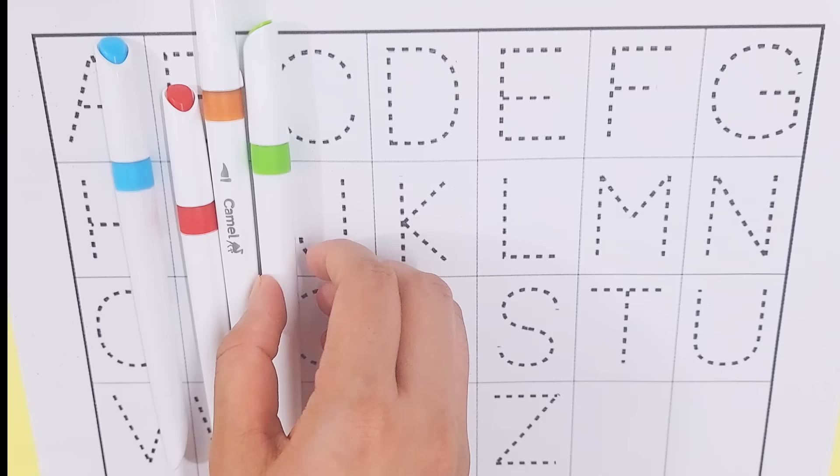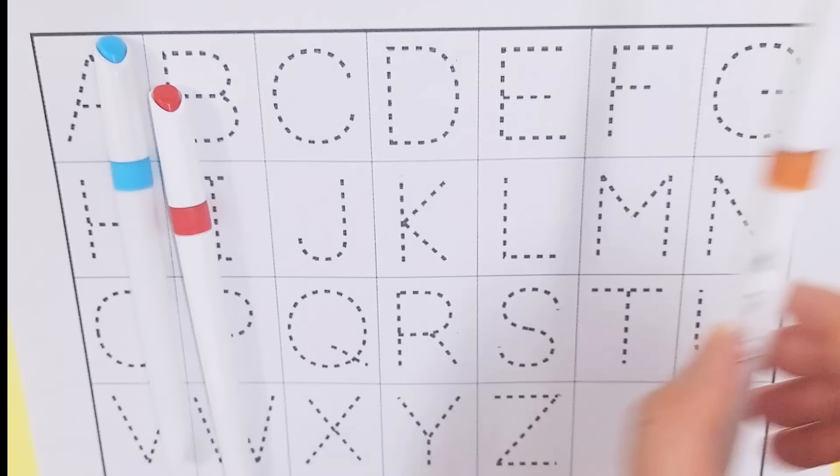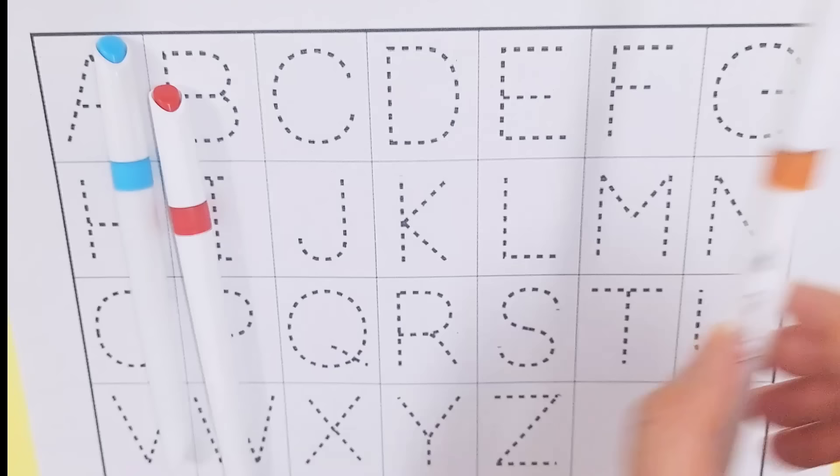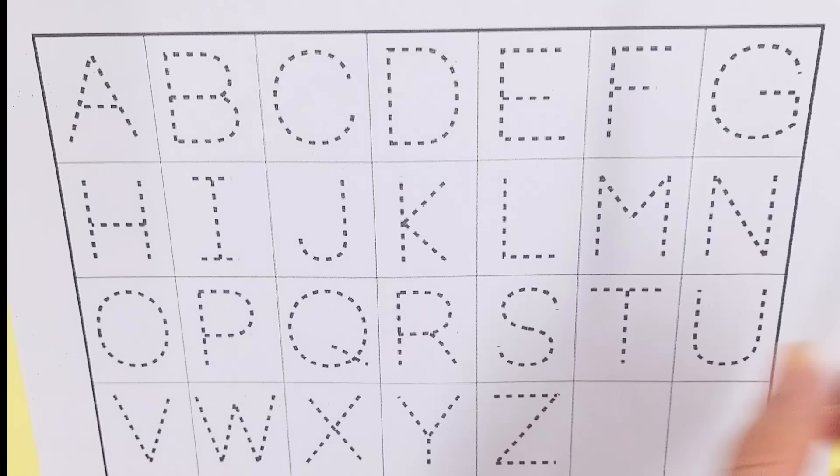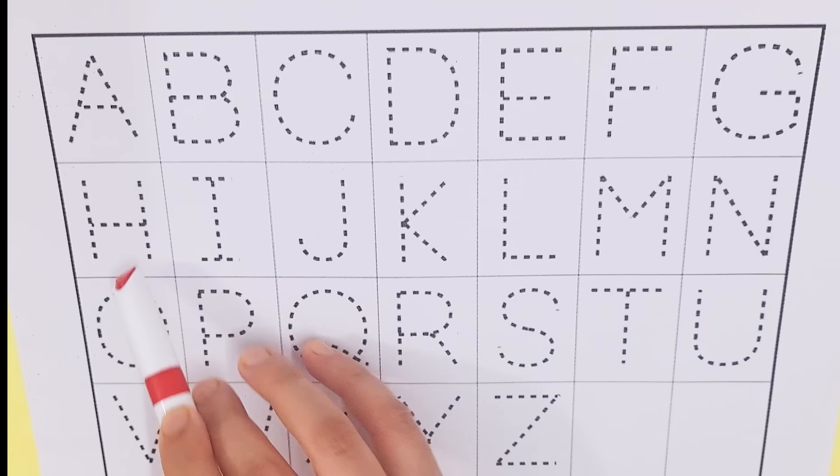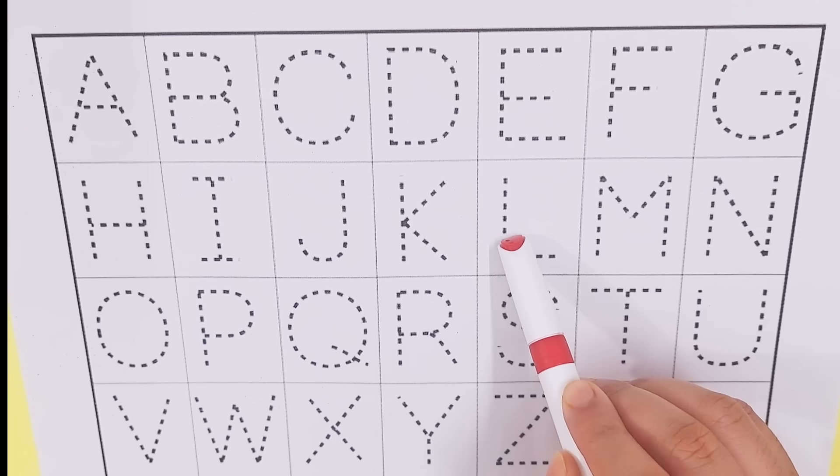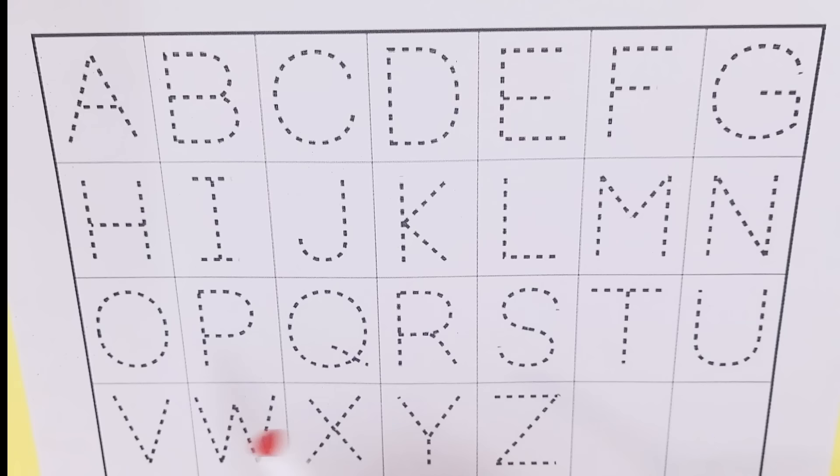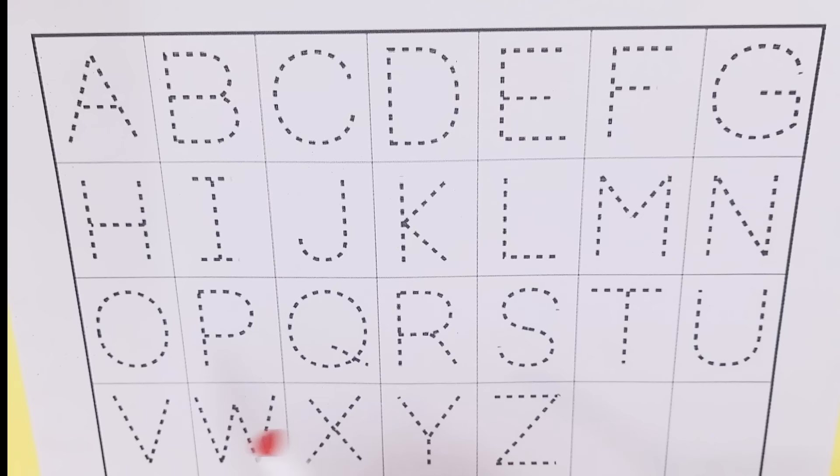Black color, light green color, brown color, red color, sky blue color. Let's learn some alphabets. A, B, C, D, E, F, G, H, I, J, K, L, M, N, O, P, Q, R, S, T, U, V, W.